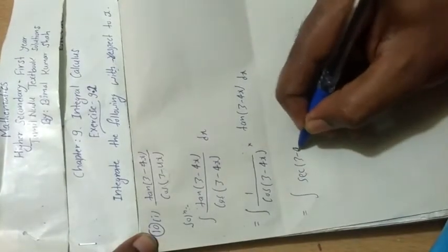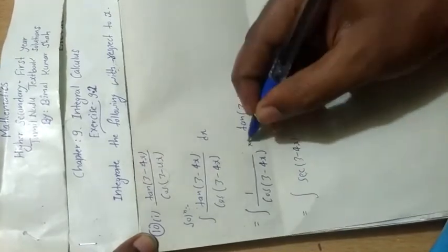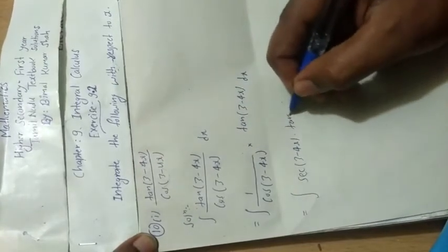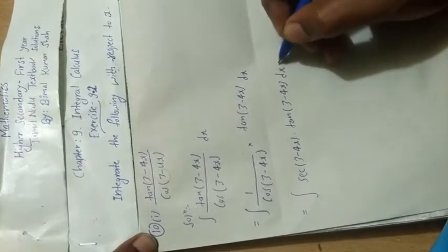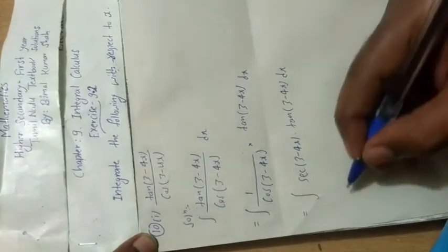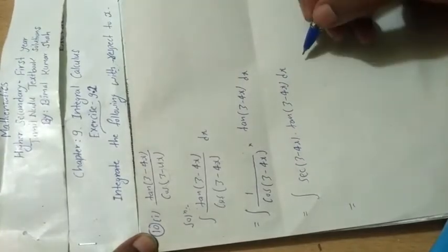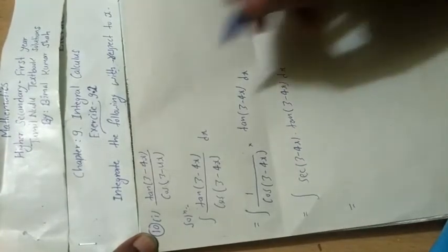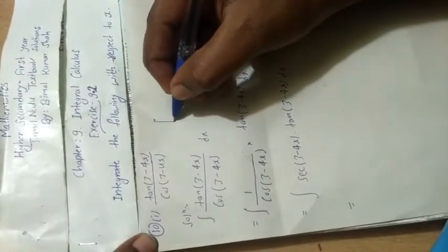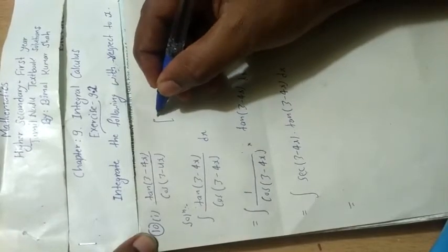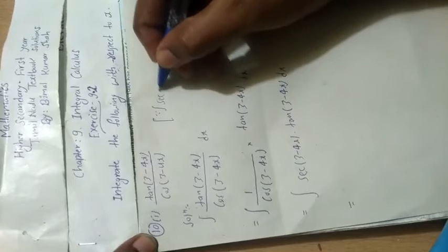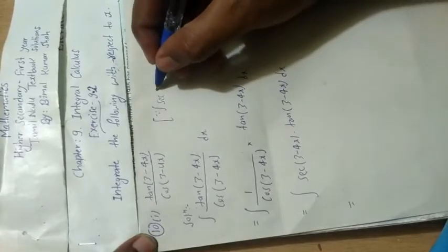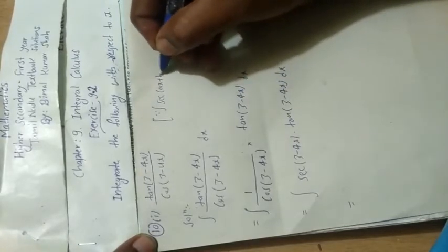Sec of 3 minus 4x into tan of 3 minus 4x dx is equal to, now we have a standard formula.